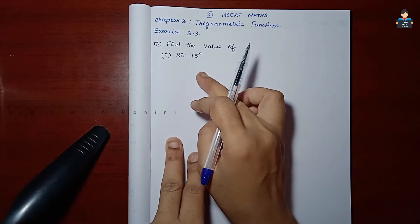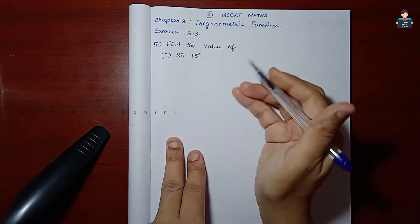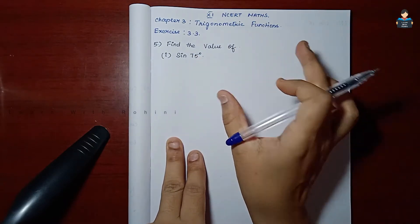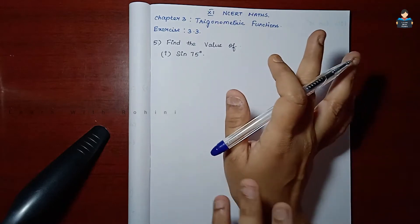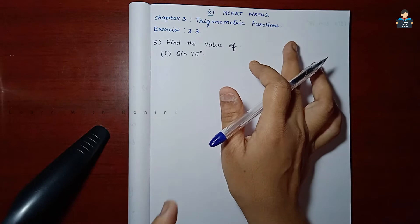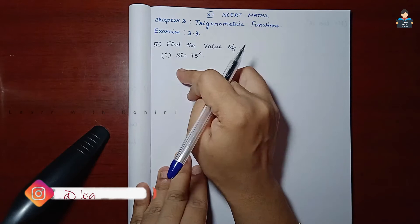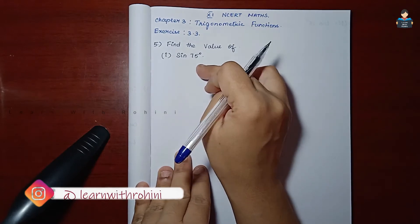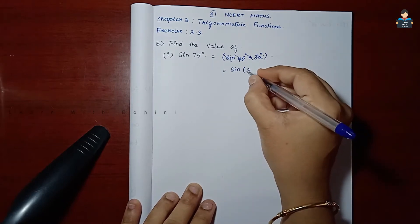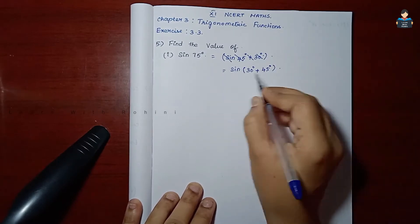For sin 75 degrees, we check the trigonometric table. Since 75 degrees is not a standard degree value in the trigonometric table, we write sin 75 degrees as sin(30 degrees plus 45 degrees).